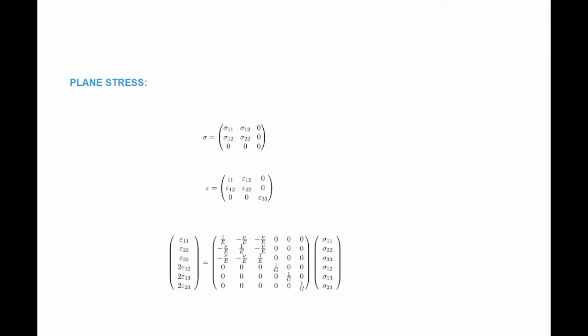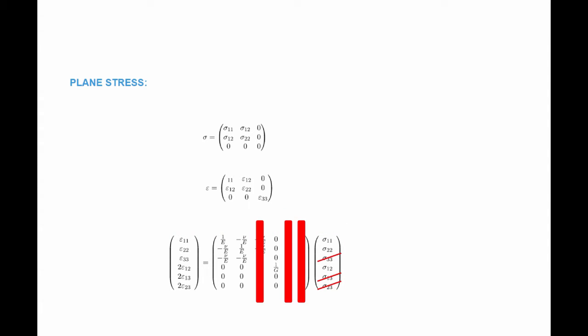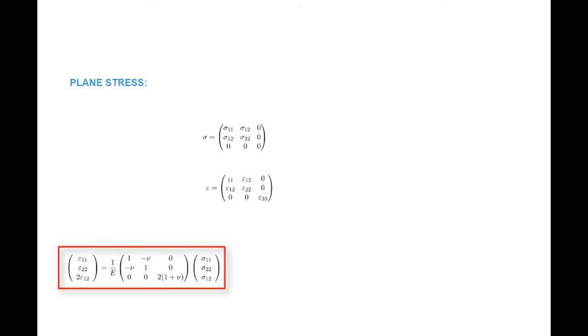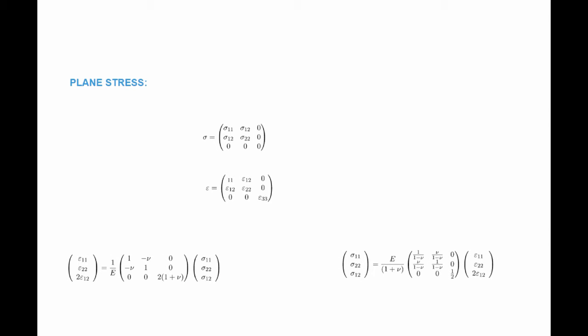We're now going to simplify the relationship between the stress and the strain, which in general is given by the six-by-six matrix. Knowing that sigma_33, sigma_13, and sigma_23 are zeros, we can eliminate the corresponding columns. We can also eliminate the rows for epsilon_13 and epsilon_23, since these are all zeros. We end up with a simplified relationship between stress and strain for the plane stress condition, and we can also invert that to get the inverted stress-strain relationship.